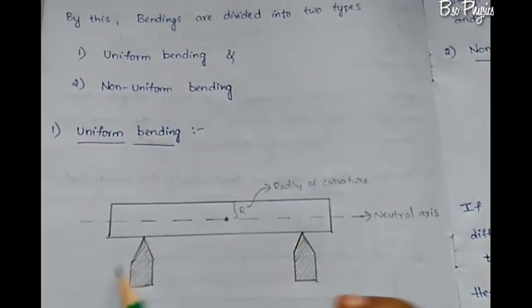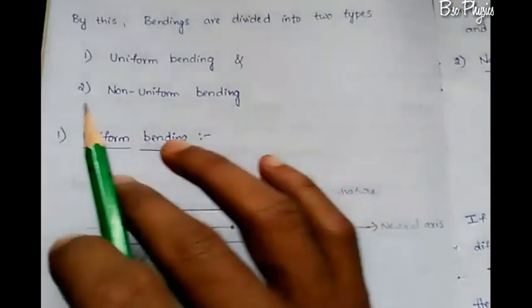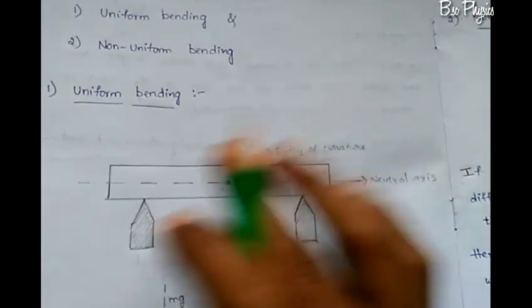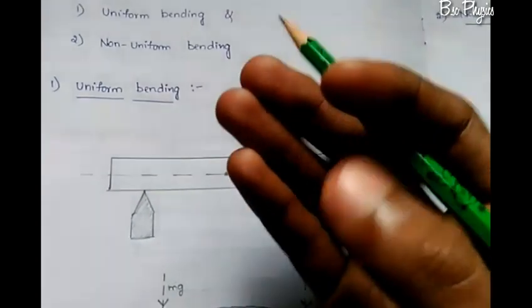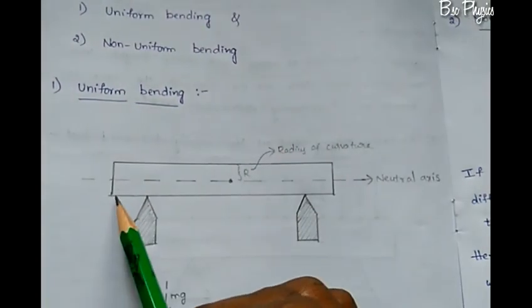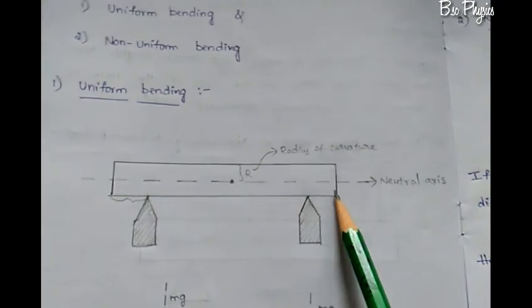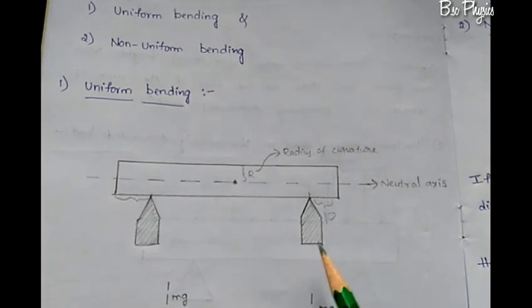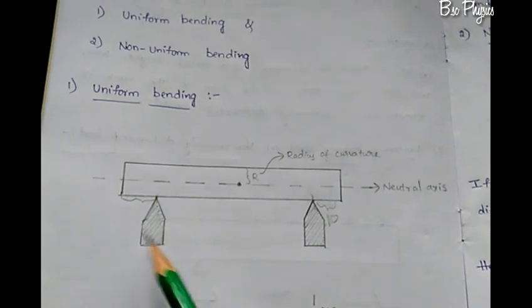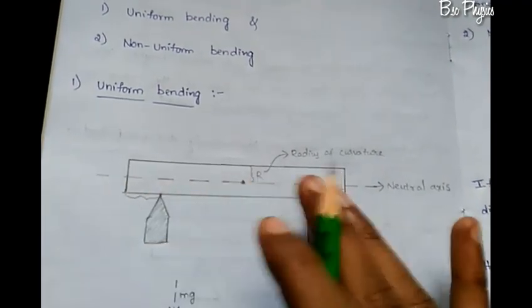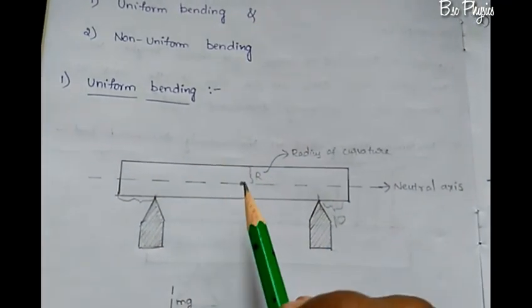For the experiment, you need a scale and a setup. For uniform bending, you use a scale marked at 10 cm intervals. Two knife edges serve as supports, and the beam — the scale — is placed on them.